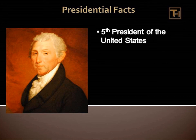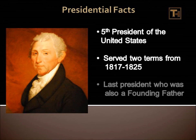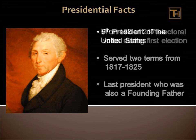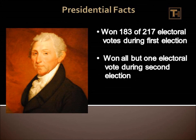James Monroe was the fifth President of the United States of America. He served two terms from 1817 to 1825. Monroe was the last President who is also a Founding Father. In the election of 1816, he won 183 electoral votes out of 217. In the election of 1820, he won all of the electoral votes except for one, which was cast for John Quincy Adams.